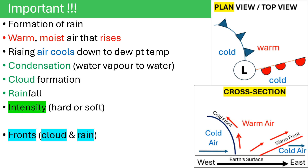In Grade 10, you were taught about the way in which rain forms. You require warm, moist air to rise. Once this air rises, it begins to cool down to what we call dew point temperature. At this point, condensation happens — all the water vapor in the air changes to liquid water. We have the formation of cloud, and eventually when the cloud becomes saturated, we are going to have rain falling. Also remember that along all fronts, whether warm fronts, cold fronts, or occluded fronts, you are going to find the formation of cloud and then the formation of rain.